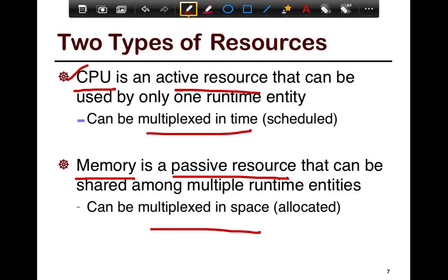CPUs are multiplexed in time through scheduling. Memory is multiplexed in space — some amount of space is allocated for each thread or process.